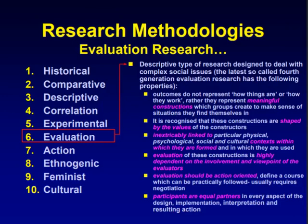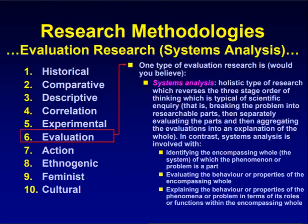Evaluation of these constructions is highly dependent on the involvement and viewpoint of the evaluators. Evaluation should be action-oriented, defining a course which can be practically followed, and usually requires negotiation. Participants are equal partners in every aspect of the design, implementation, interpretation, and resulting action. One type of evaluation research is systems analysis — a holistic type of research which reverses the three-stage order of scientific inquiry: breaking the problem into researchable parts, evaluating the parts separately, then aggregating evaluations into an explanation of the whole. In contrast, systems analysis identifies the encompassing whole (the system), evaluates the behaviour of that whole, and explains the phenomena in terms of its roles or functions within the encompassing whole.